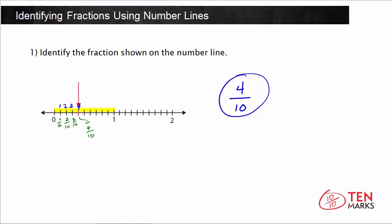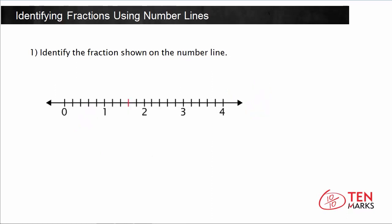Let's take a look at another number line. We want to identify the fraction shown where the red tick mark is. This number line goes from 0 to 4. We need to look at each whole number and count how many equal parts are between 0 and 1. There are 1, 2, 3, 4, 5 parts between 0 and 1, and that means each tick mark represents 1 fifth.